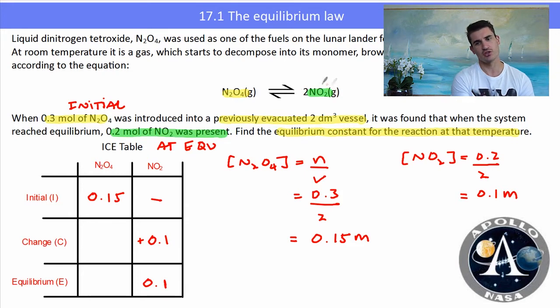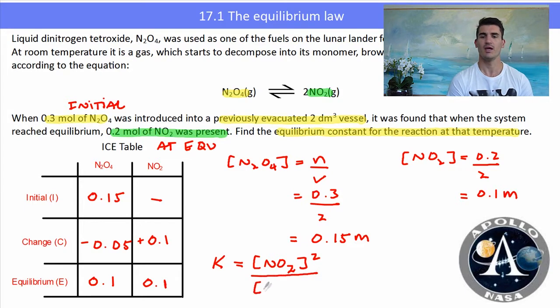If you look at the coefficient, it's got a 2 out front. So if its concentration has increased by 0.1 molar, then the concentration decrease of N₂O₄ must be half because it's a 1 to 2 ratio. The change for N₂O₄ is minus 0.05, half of what NO₂ went up by. Now I have both equilibrium concentrations from the table. I can use my equilibrium law expression, subbing in my equilibrium concentrations, and work out my K value, which is 0.1 and the units are molar.